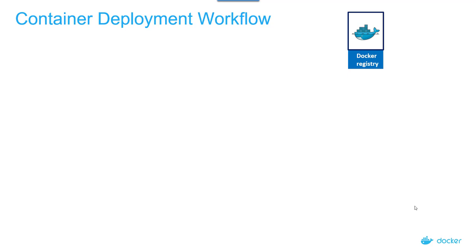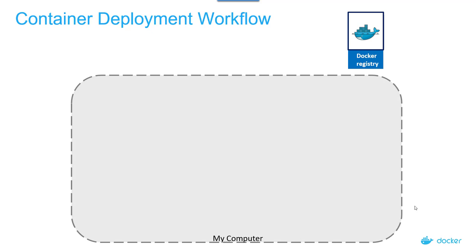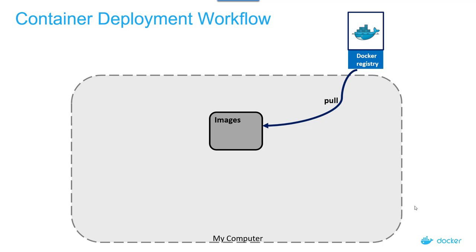Let's start with a Docker registry, which is a public container that has many images. This could be public or private, but it's usually on the internet — an example is Docker Hub. I start by pulling an image from the Docker registry, so I get an image on my computer, which is just a file system. Docker is installed on my computer as the Docker engine.